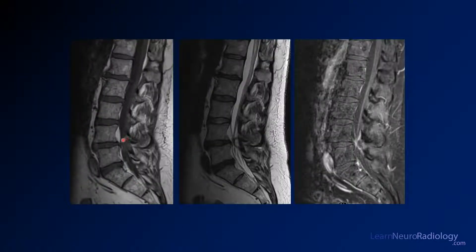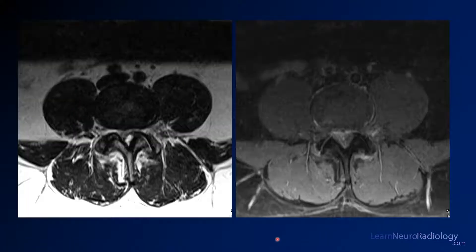Here you see something indenting the thecal sac from posteriorly. On the T2 it's got a dark rim and is T2 hyperintense in the center. When you give contrast there's a little bit of enhancement around it but it's not primarily enhancing, so you're probably not looking at a schwannoma or anything like that.